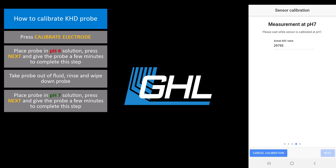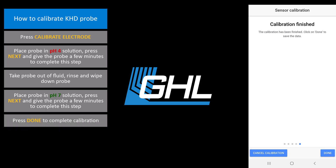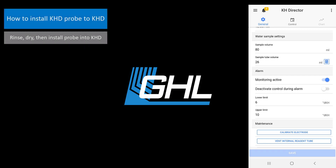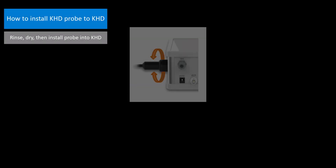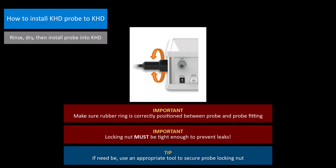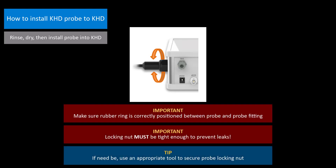When you get to this screen, the calibration will be complete. Take the probe out of the fluid, rinse, dry, then insert the probe into the KHD probe port. When installing the probe, make sure the rubber ring from the locking nut is correctly positioned. Also make sure the locking nut is tight enough so you don't have any leaks from the probe port. If need be, use an appropriate tool to carefully tighten the screw connection.